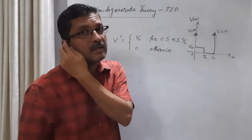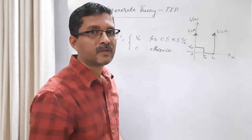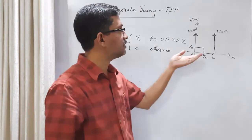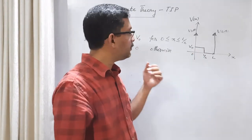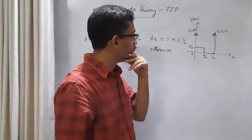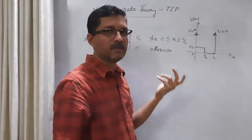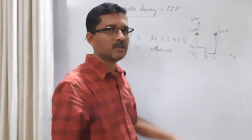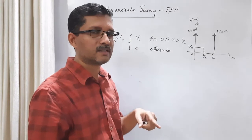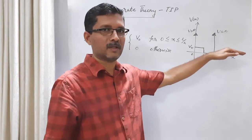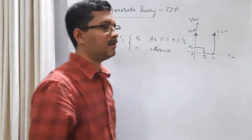What is the first-order correction in energy for the nth state? In the first order, we apply the constant perturbation throughout. The result will be En0 plus V0 by 2. The exact result is V0 by 2. Let us see what the first-order approximation in energy gives us.